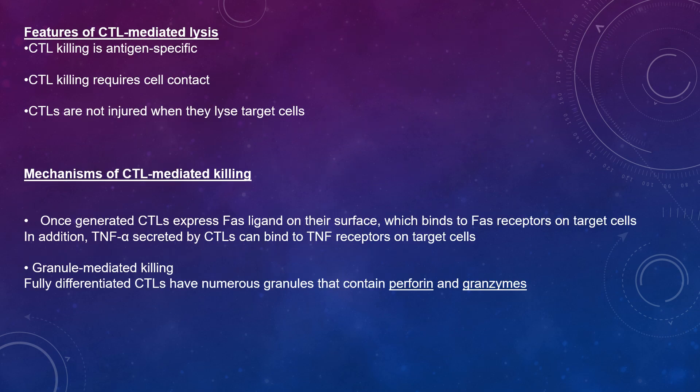CTL killing is antigen-specific. To be killed by a CTL, the target cell must bear the same class 1 MHC-associated antigen that triggered pre-CTL differentiation; this requires cell-to-cell contact. CTLs are triggered to kill when they recognise the target antigen associated with a cell-surface MHC molecule, and adjacent cells lacking the appropriate target MHC antigen are not affected. CTLs are not injured when they kill target cells, and each CTL is capable of killing numerous target cells sequentially.